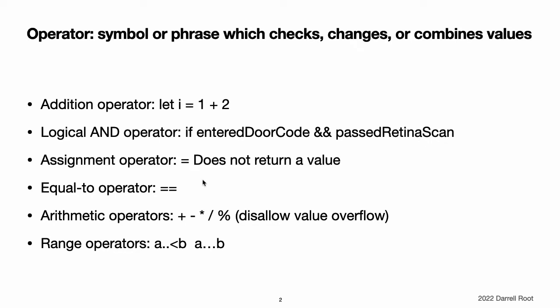The assignment operator does not return a value to prevent it from being mistakenly used when the equal to operator is intended. Arithmetic operators detect and disallow value overflow to avoid unexpected results when working with numbers that become larger or smaller than the allowed value range of the type that stores them. You can opt in to value overflow behavior by using Swift's overflow operators. Swift also provides range operators that are not found in C, such as a...b and a..<b, as a shortcut for expressing a range of values. Advanced operators covers Swift's advanced operators and describes how to define your own custom operators and implement the standard operators for your own custom types.